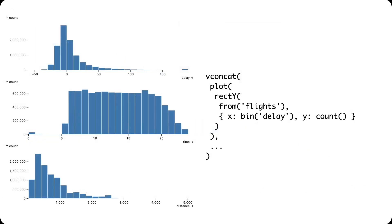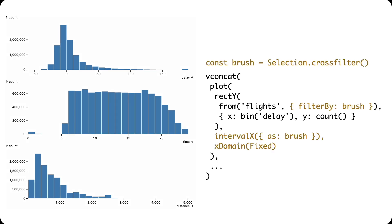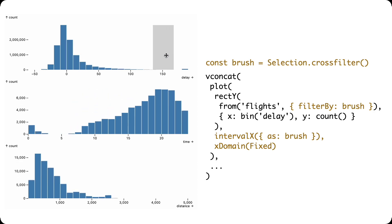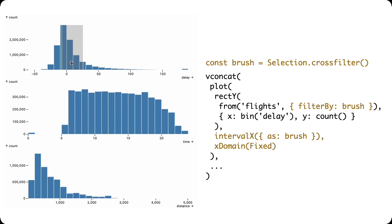Here we visualize 10 million flight records as histograms. We bin along the x-axis and visualize counts per bin on the y-axis. We add a selection with cross-filter resolution and add interval brush interactors. As we select longer and longer arrival delays, we see those flights are more likely to leave later in the day.